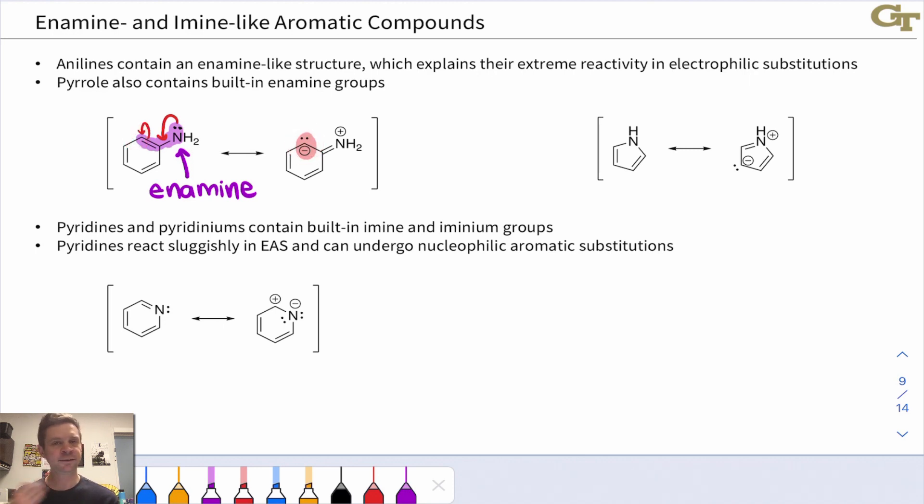The same thing happens in aromatic heterocycles. For example, pyrrole contains an embedded enamine within it, and we can push electrons just like we did in this case, starting with that good electron donor the nitrogen atom and pushing over to carbon to see that that carbon, which looks like an alpha carbon of an enamine, is nucleophilic.